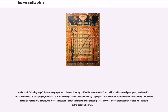In the book Winning Ways, the authors propose a variant which they call Adders and Ladders, which, unlike the original game, involves skill. Instead of tokens for each player, there is a store of indistinguishable tokens shared by all players — the illustration has 5 tokens. There is no die to roll; instead, the player chooses any token and moves it 1 to 4 spaces. Whoever moves the last token to the home space wins.